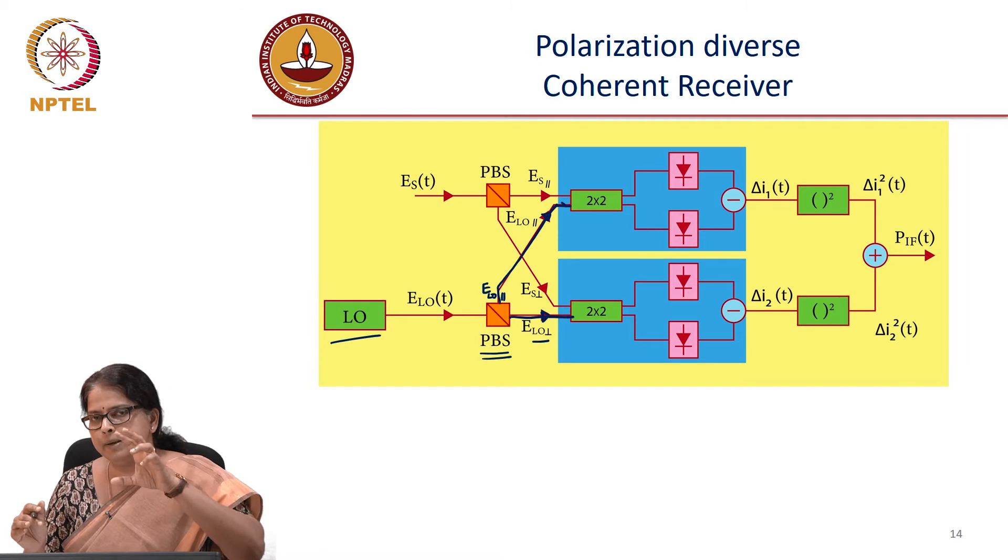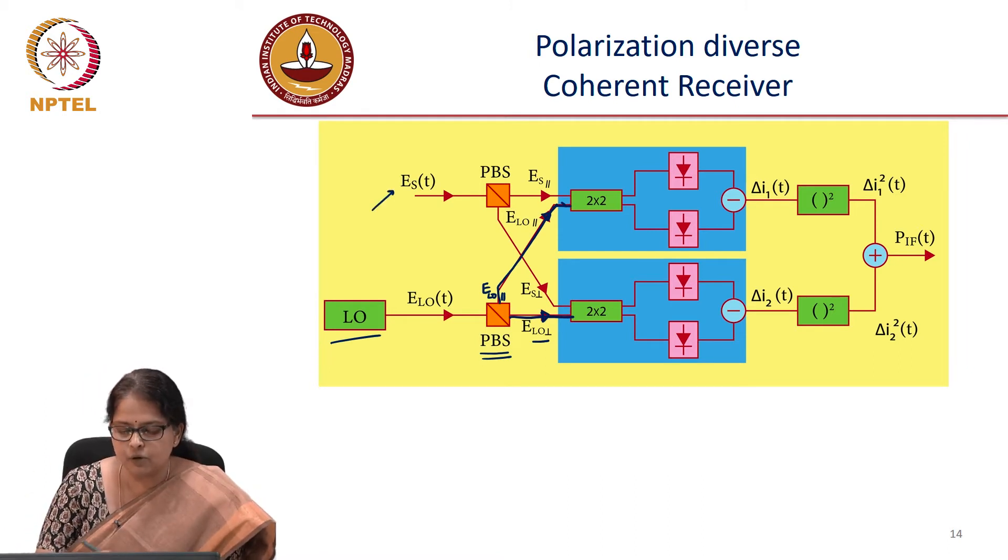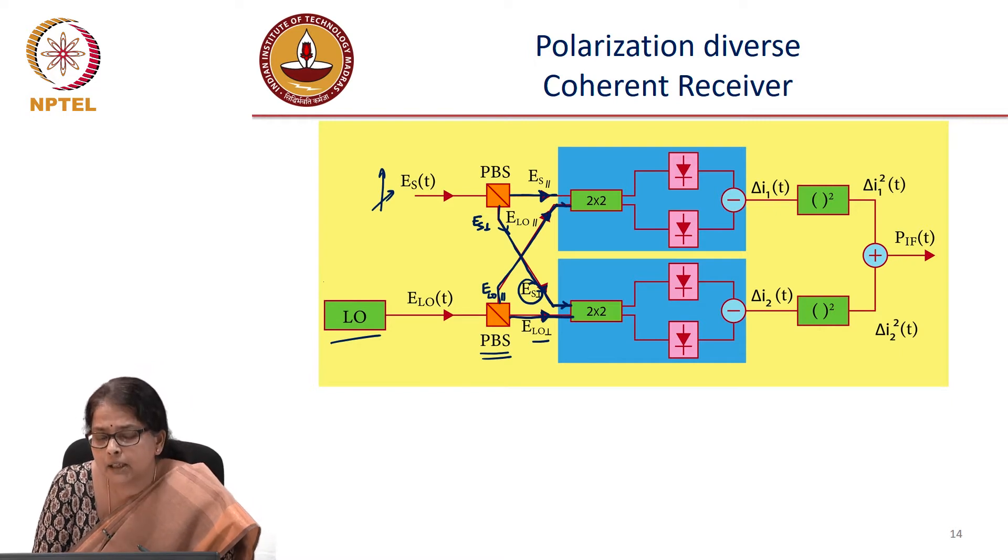Polarization beam splitter is simply a polarization sorter. Input could be arbitrary polarization. The parallel part of the polarization is available in this output port and the perpendicular part of the ES perpendicular is available in this port, which you are feeding it into the second directional coupler.